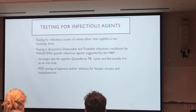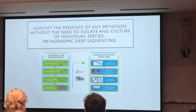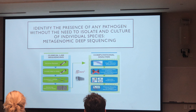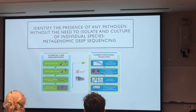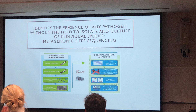The future for laboratory tests is to be able to identify pathogens that cause uveitis without the need to isolate and culture individual species. What's being done right now at UCSF is metagenomic deep sequencing — taking samples of aqueous and vitreous, isolating the DNA and RNA in that sample, causing them to replicate, and with the use of computers, analyzing the DNA and RNA sample and matching it to a library of DNA and RNA of viruses, fungi, and other infectious agents. This can be done within a day and has been a great help in some diagnostic dilemmas.